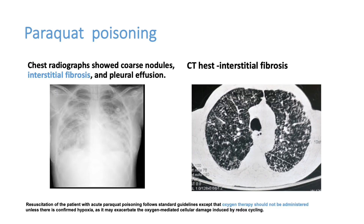On X-ray, you can see bilateral diffuse infiltrates, which are actually lung fibrosis and interstitial fibrosis — a classical presentation of paraquat poisoning. When the patient is treated with oxygen, this problem can be aggravated. Therefore, early or unnecessary oxygenation should not be given. However, during the late phase of lung infiltration or fibrosis, oxygen may be required.